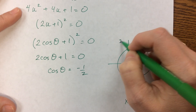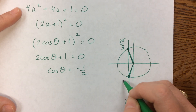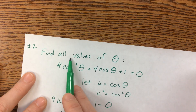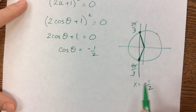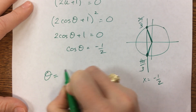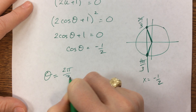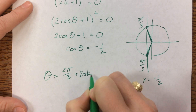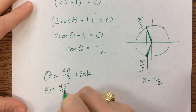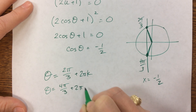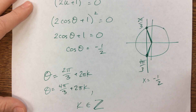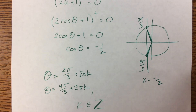That is 2π/3 and 4π/3. But since they said find all values, we have infinitely many solutions. So we're going to say theta is equal to 2π/3 plus 2πk, and theta is equal to 4π/3 plus 2πk, where k is an element of the integers.